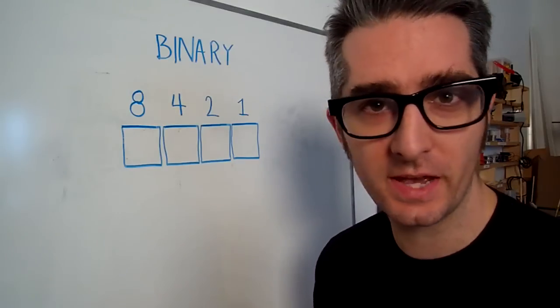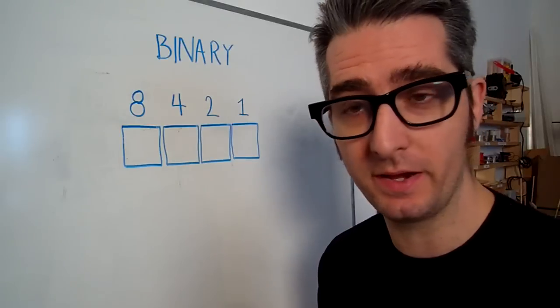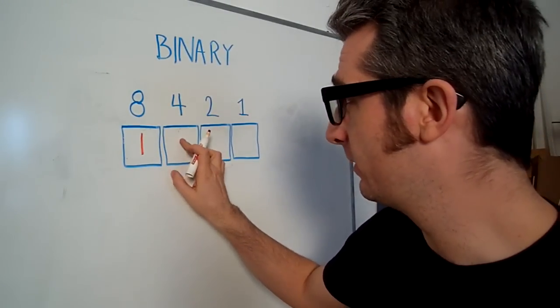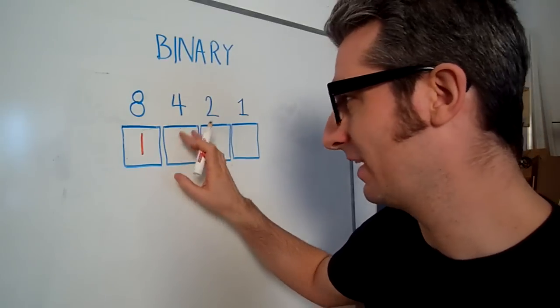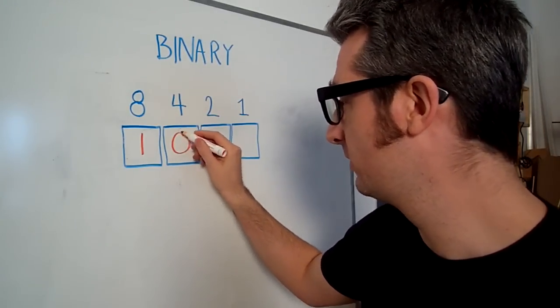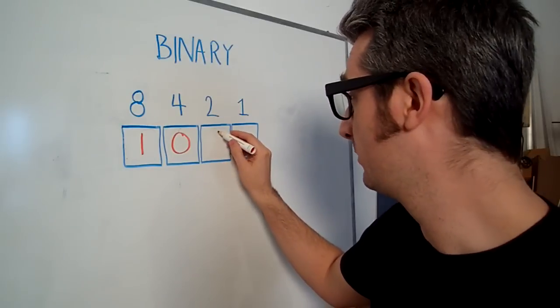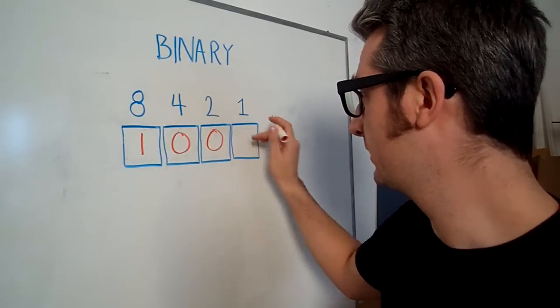So let's say I want to represent the number 9 in binary. I'd need 1, 8 and if I put a 1 there, it would make 12, that's too much, so I'll put a 0. If I put a 1 there, it would be 10 and that's too much, so I'll put a 0. And 8 plus 1 is 9, so I need to put a 1 there and that equals 9.